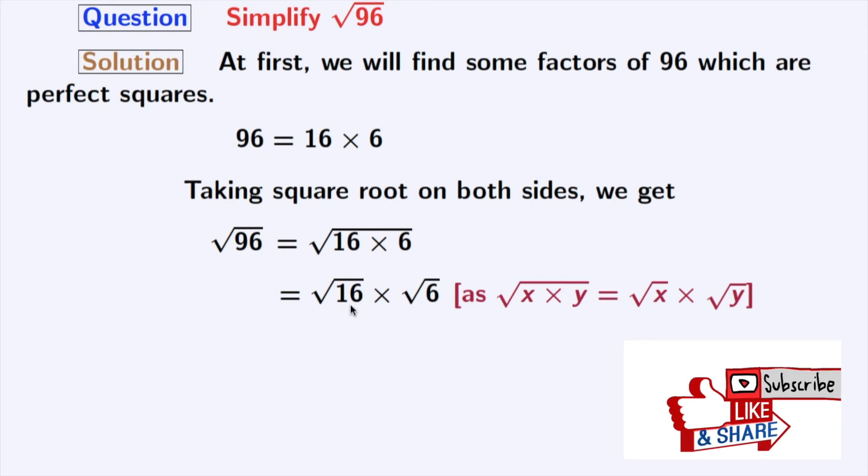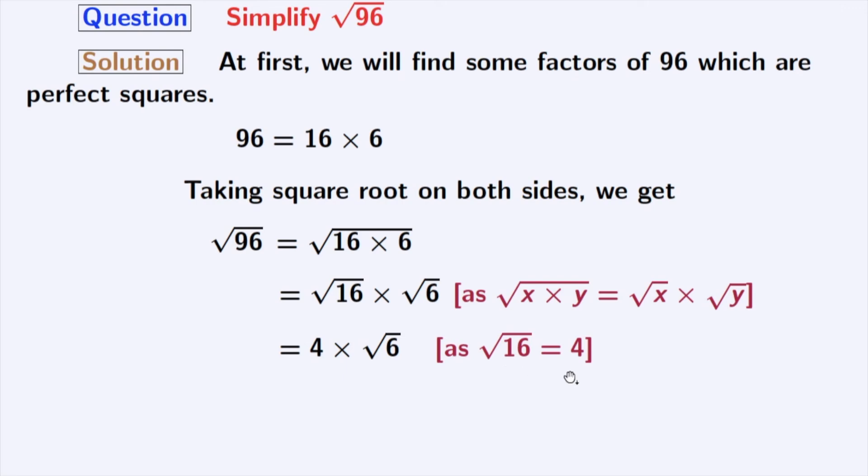Now, from the first square root, we get 4. And the second square root, that is square root of 6, remains same. As we know that the square root of 16 is 4. After multiplication, we get 4 root 6. And this is our final answer.